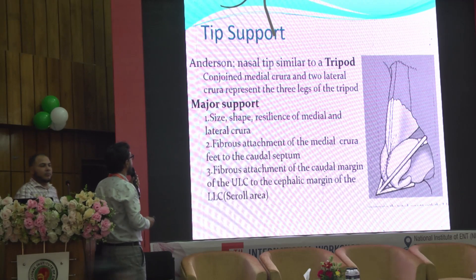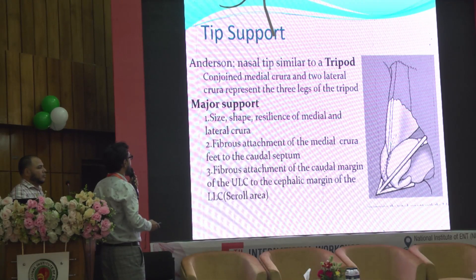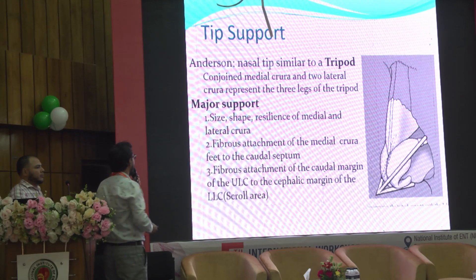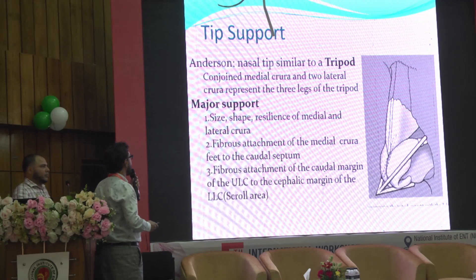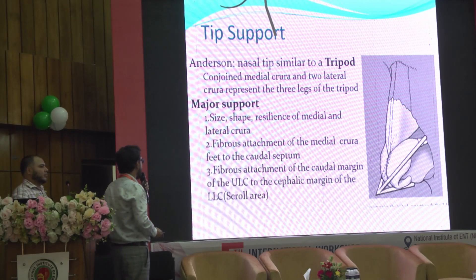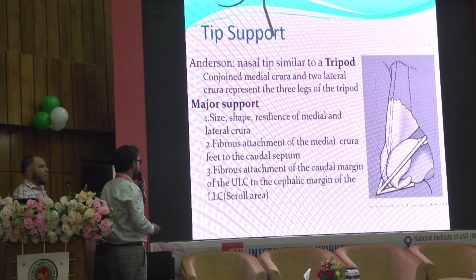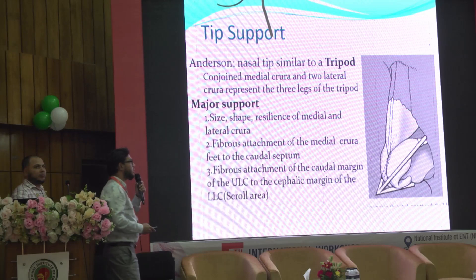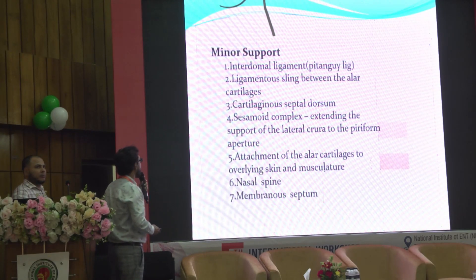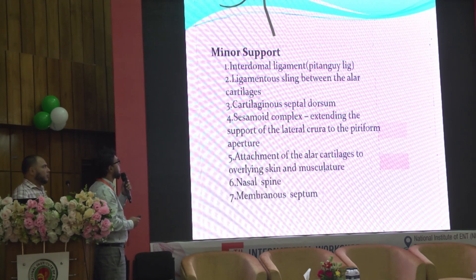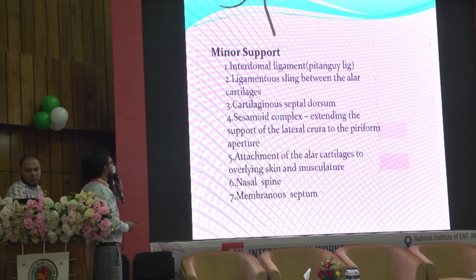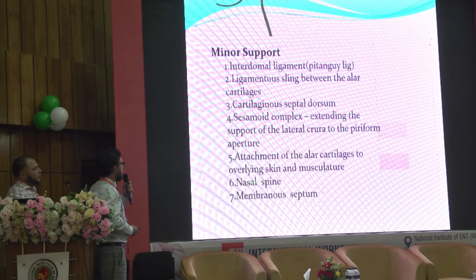The Anderson tripod concept describes the lower lateral cartilage: the conjoined medial crura and two lateral crura represent the three legs of the tripod. Major tip support comes from the size, shape, and resilience of the medial and lateral crura, fibrous attachment of the medial crura to the caudal septum, and fibrous attachment of the caudal margin of the upper lateral cartilage to the lower lateral cartilage at the scroll area.